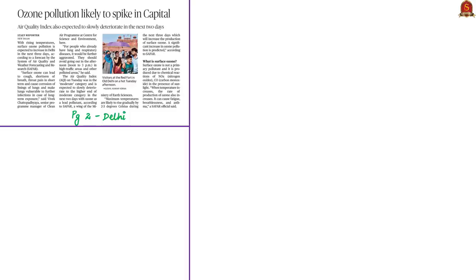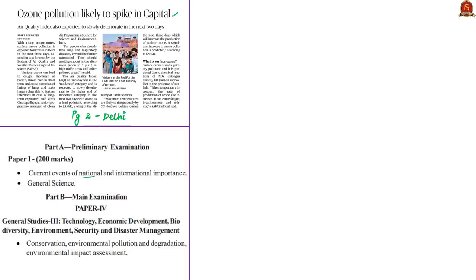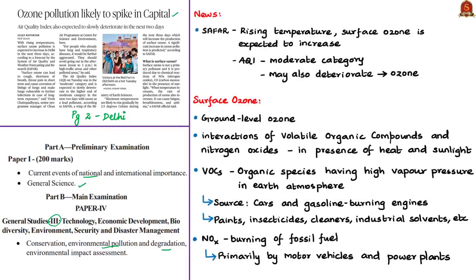The next article is titled 'Ozone Pollution Likely to Spike in Capital.' This is relevant under prelims current events of national importance and general science, and in mains GS Paper 3 under Environmental Pollution and Degradation. According to the forecast by the System of Air Quality and Weather Forecasting and Research — SAFAR — due to rising temperatures, surface ozone pollution is expected to increase in Delhi. The air quality index was in the moderate category and is expected to deteriorate, with ozone as the lead pollutant. With increased temperature, surface ozone production will also increase.